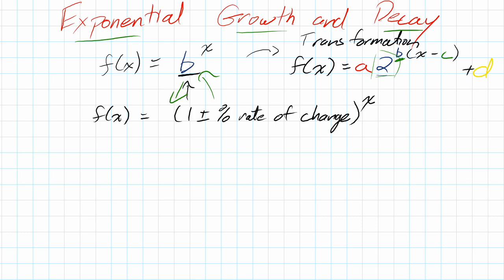Now that can also have an a in front and some value that vertical translates this. And it could have something in the exponent that compresses due to time. But this is the key part of it, is the base having some kind of change to it.